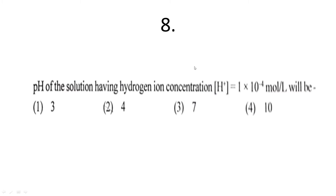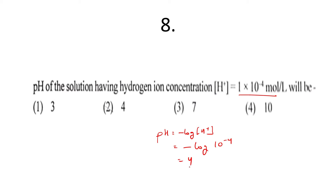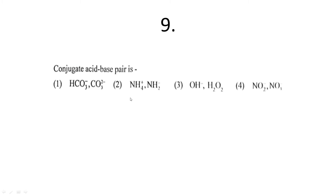The eighth question: the pH of a solution having hydrogen ion concentration [H⁺] = 1 × 10⁻⁴ mol/L. The pH formula is −log[H⁺]. So pH = −log(10⁻⁴) = 4. Hence option two is correct.